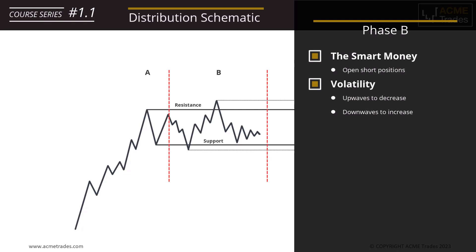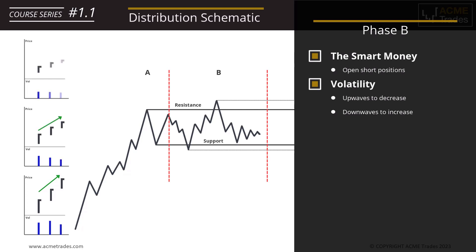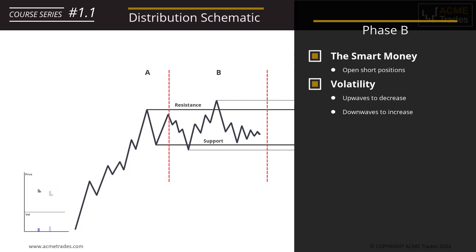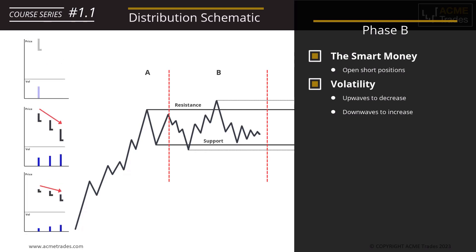For example, we want the up waves to decrease — spreads could progressively narrow while volume reduces. So we can see the up waves are decreasing in quality, whereas we want the opposite for down waves — we want to see the selling improve within Phase B. That transfer is what we're looking to see.